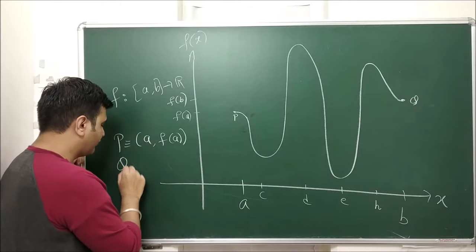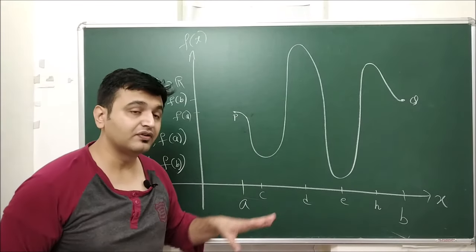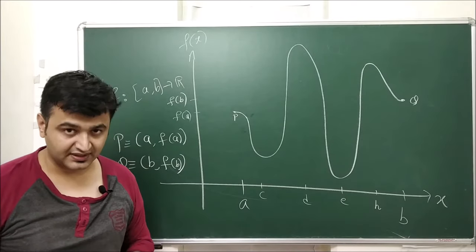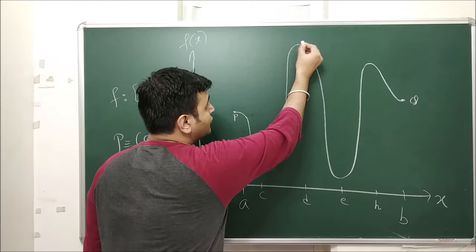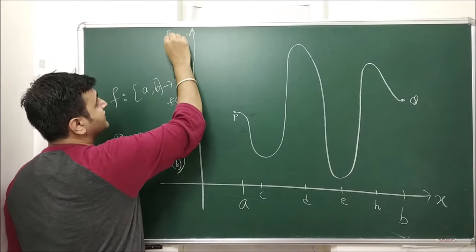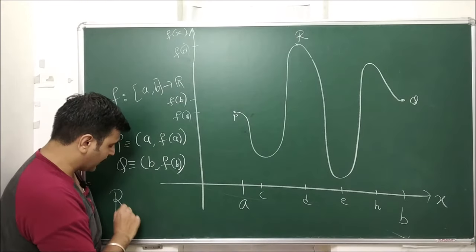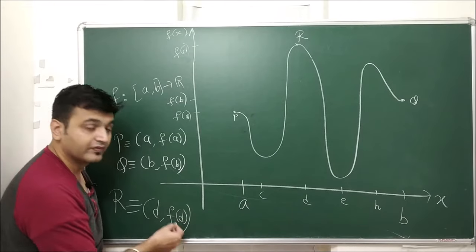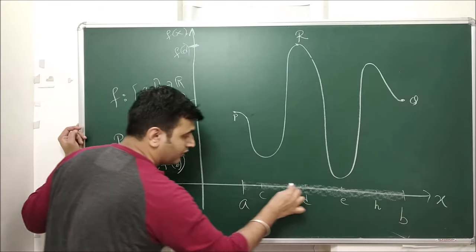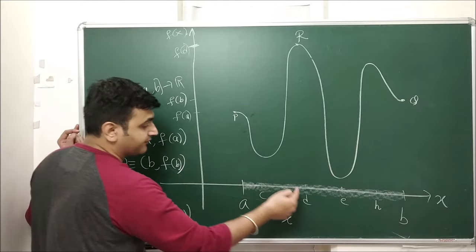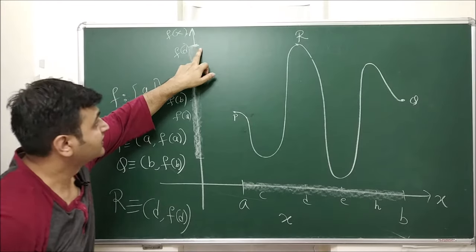Once you have the graph of a function, one can ask: what is the maximum value of the function and what is the minimum value? From the graph you can easily see that at point D, here is the topmost point. If I call this point R, then R is the point (d, f(d)), and as you can see, f(d) is the maximum value — you take any x from the domain and look at its image, it will always be less than or equal to f(d).